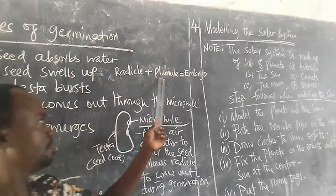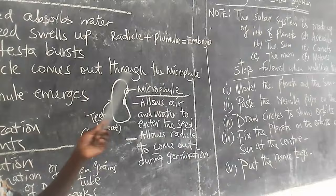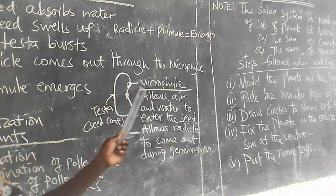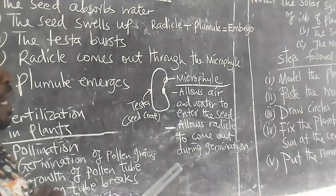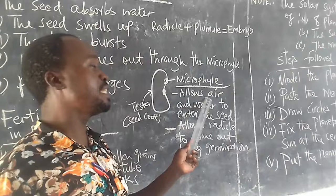Here is the structure of a seed. We have the micropyle. The outer cover is called the testa or seed coat. The following are functions of the micropyle: it is the opening that allows the entry of air and water. Remember, the air I'm talking about is oxygen — oxygen is the gas that supports germination.